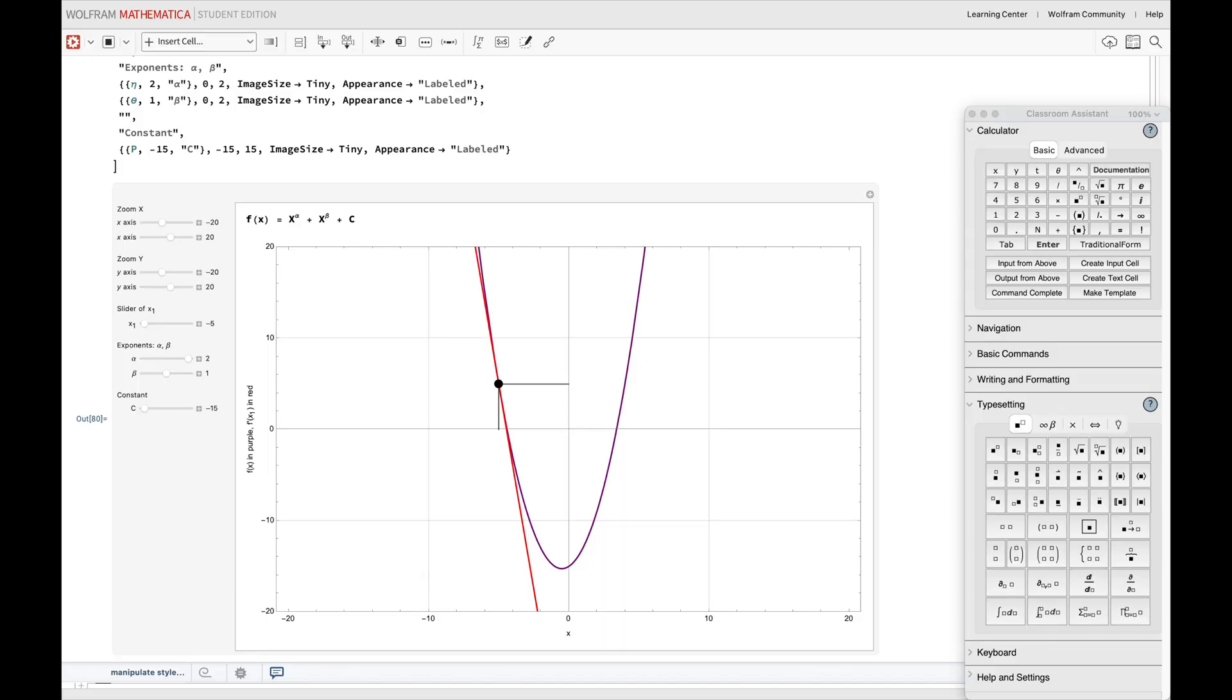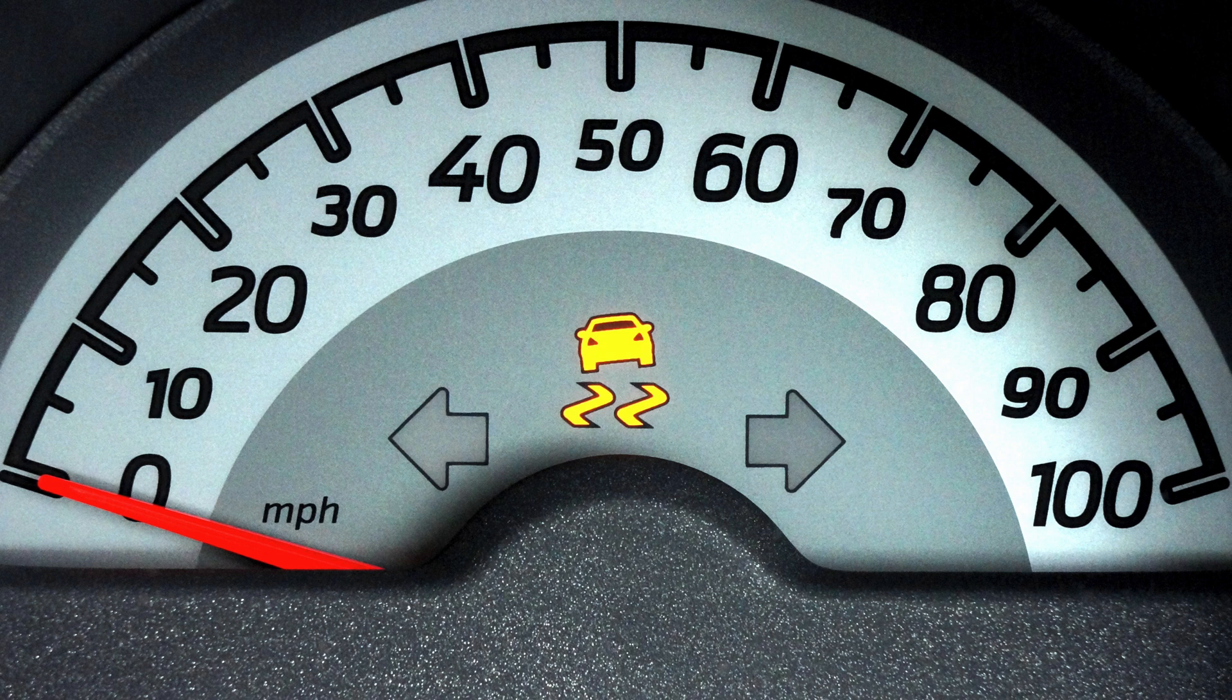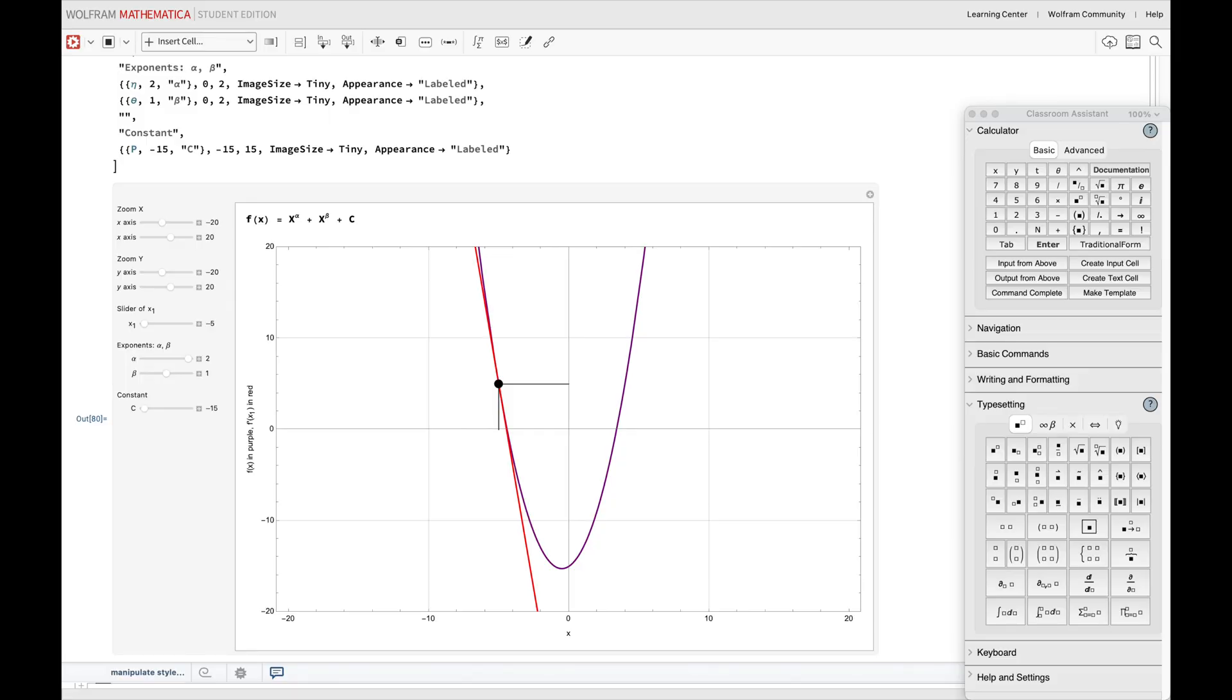You see, in the language of calculus, a derivative measures how a function changes as its input changes. It's like the speedometer of your car. The speedometer tells you how fast you're moving at any given moment. Likewise, a derivative tells you how fast your function is changing at any given point.